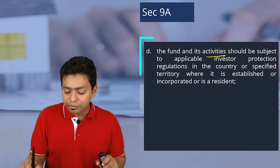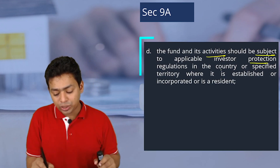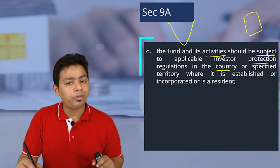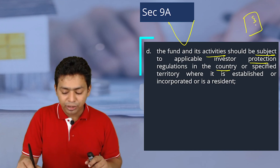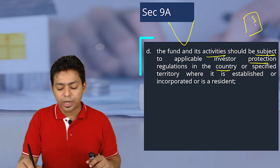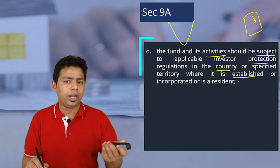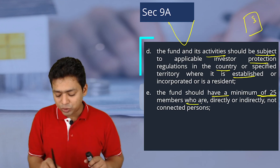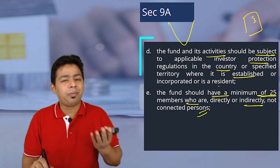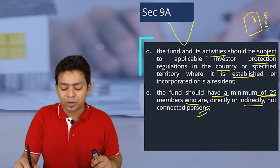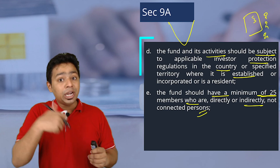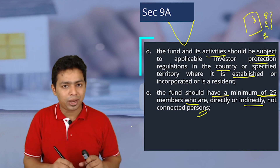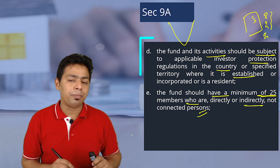A fund and its activities should be subject to the application of investor protection regulations in the country — just as India has SEBI, that foreign country should also have a similar regulatory body. The activities of the foreign mutual fund should be regulated by some organization — it should not be unregulated. The fund should have a minimum of 25 members who are directly or indirectly not connected persons, meaning it should be a genuine mutual fund with at least 25 genuinely different members — not from the same family or relatives.